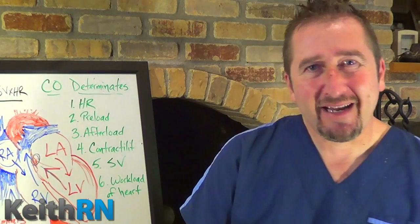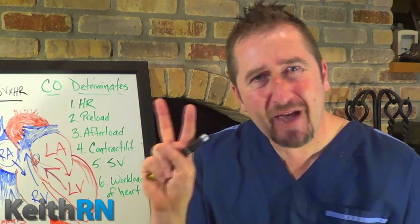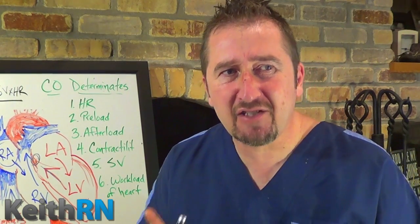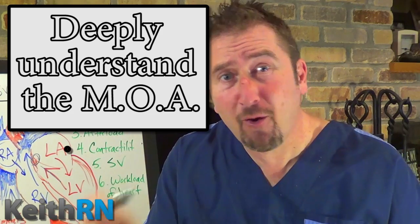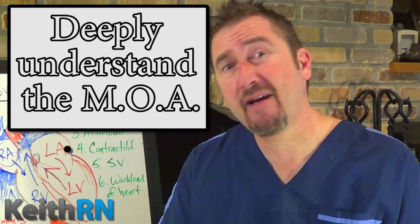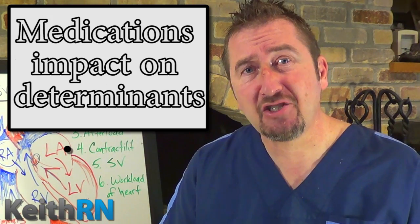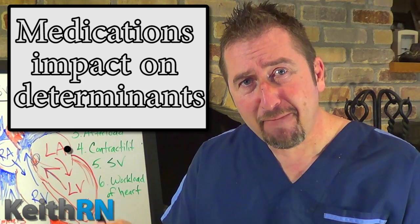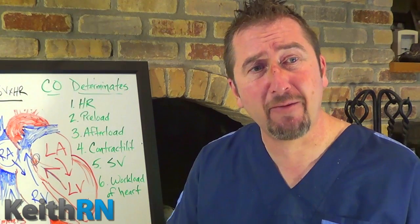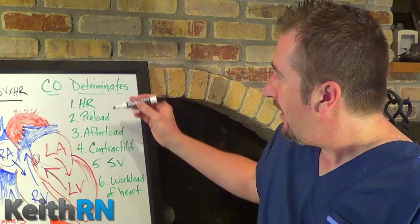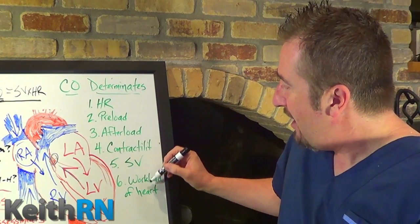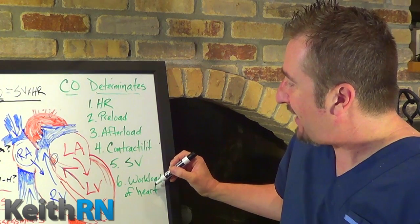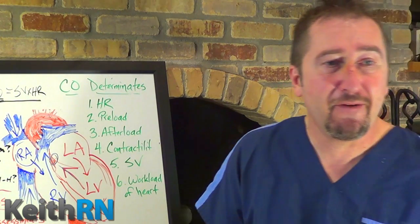For cardiac medications such as ACE inhibitors, there are two things a nurse must know to deeply understand this medication. First, understand — not just memorize — the mechanism of action. And secondly, how does this medication impact, and how is it affected by, the determinants of cardiac output: heart rate, preload, afterload, contractility, and stroke volume — with the net impact being how it affects the workload of the heart.